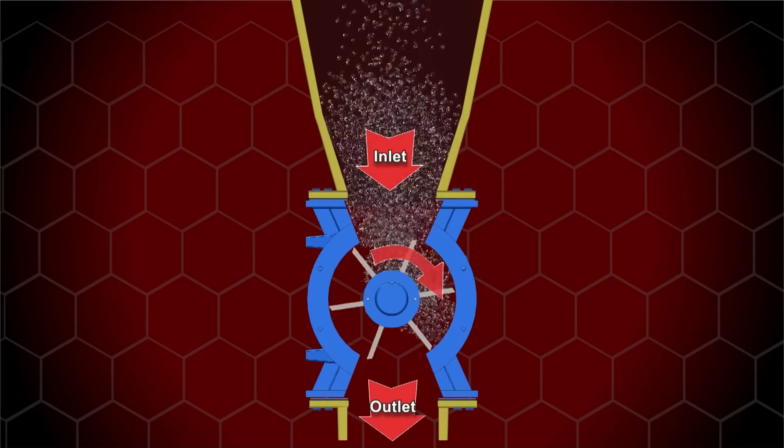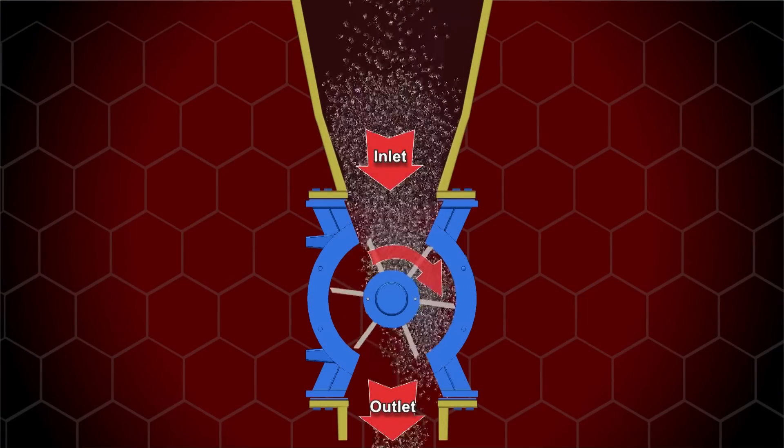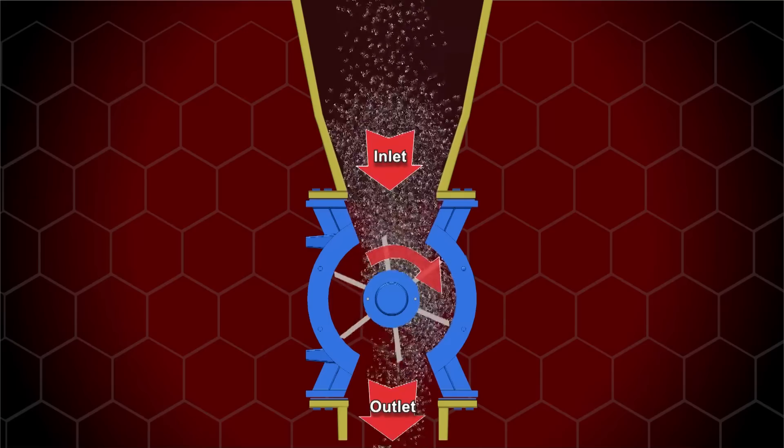Rotary airlock valves are used where there's a need to minimize air loss while transferring material between vessels with differing pressures.